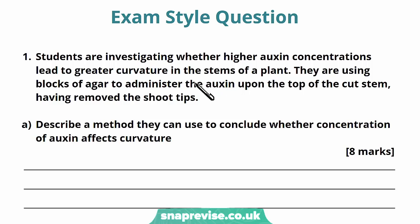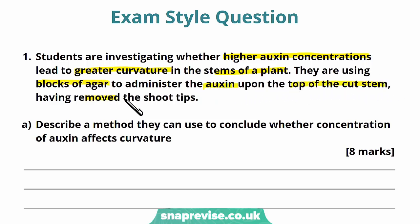One of the questions here refers to one of the experiments we've covered. It says students are investigating whether higher auxin concentrations leads to greater curvature in the stems of a plant. They are using blocks of agar to administer the auxin upon the top of the cut stem having removed the shoot tips. This is very similar to the third experiment we've been talking about, where we used a serial dilution to create the agar blocks and then put them onto the cut stem where the shoot tip would normally be, which secretes the auxin.